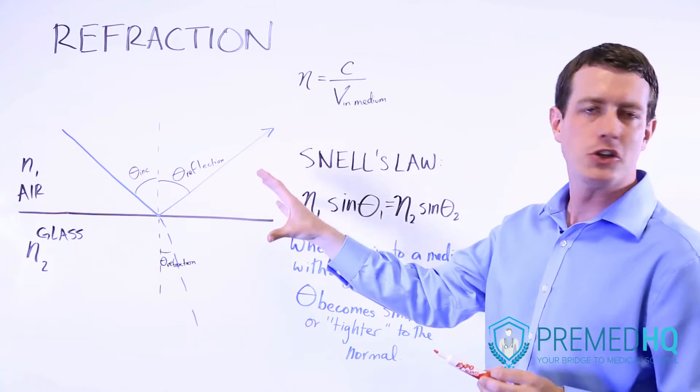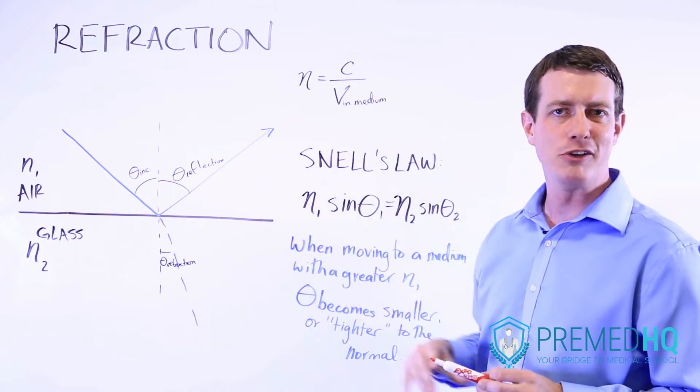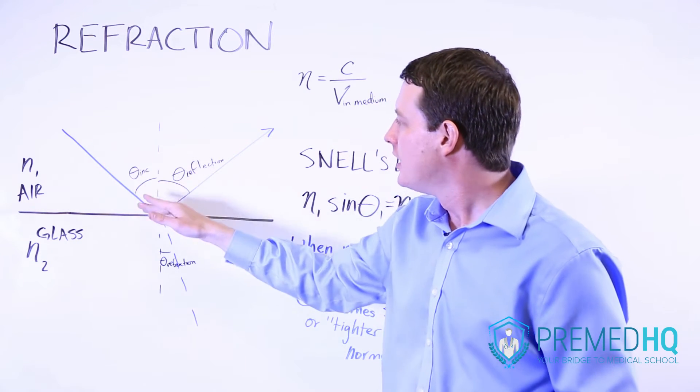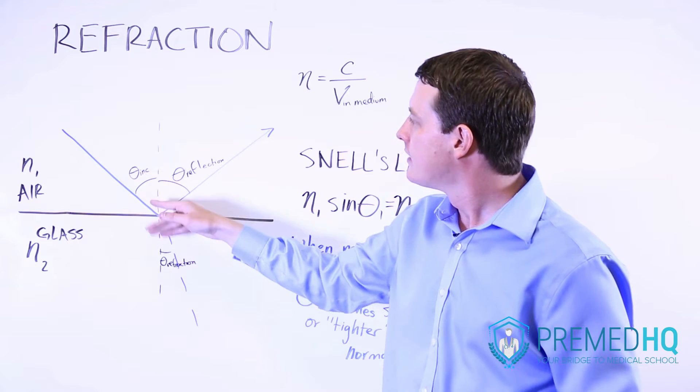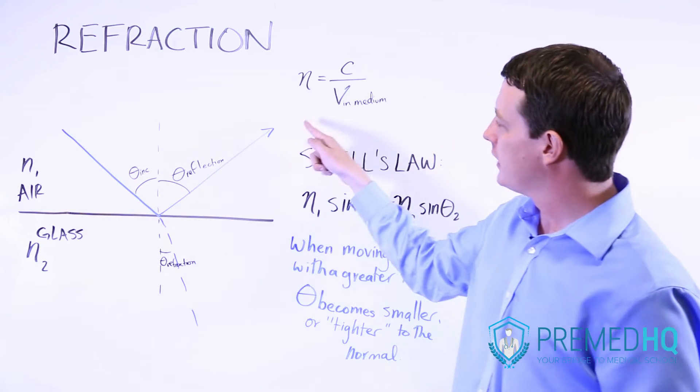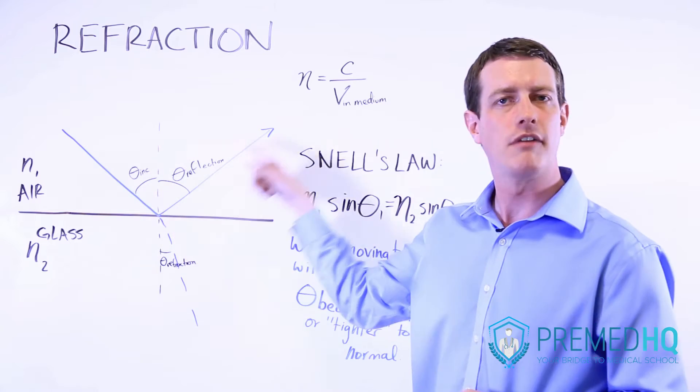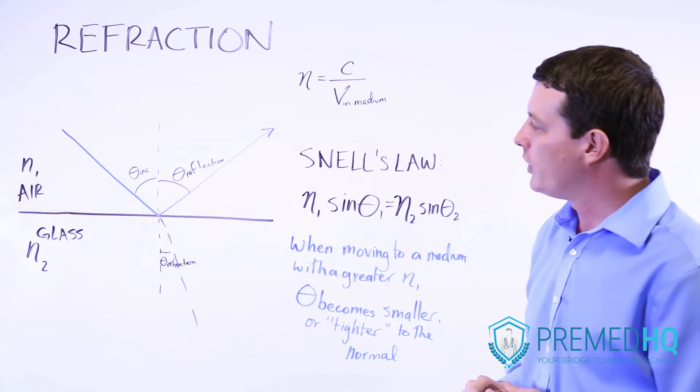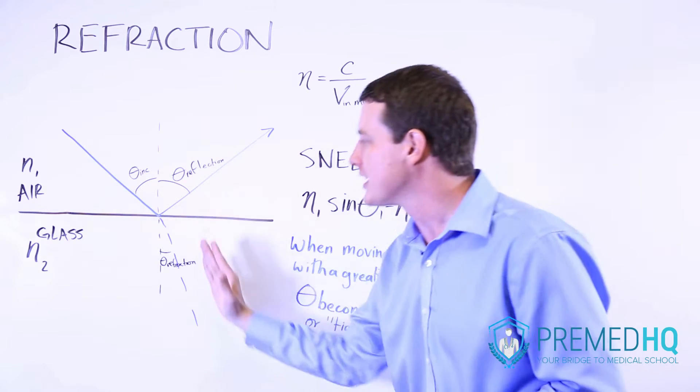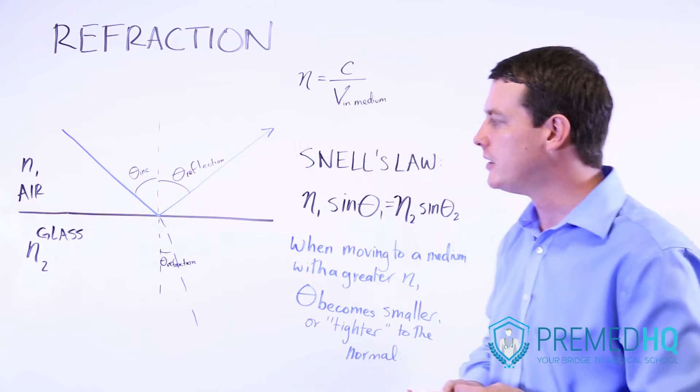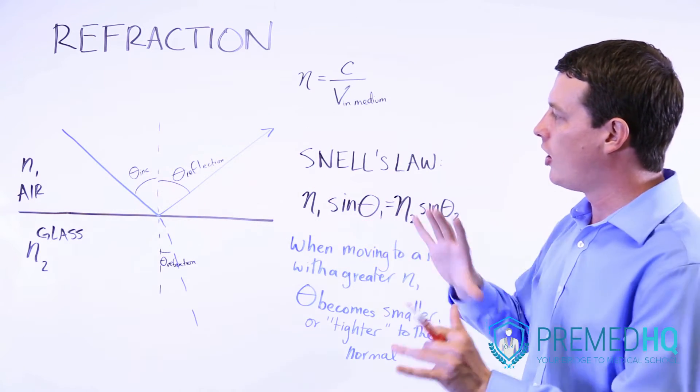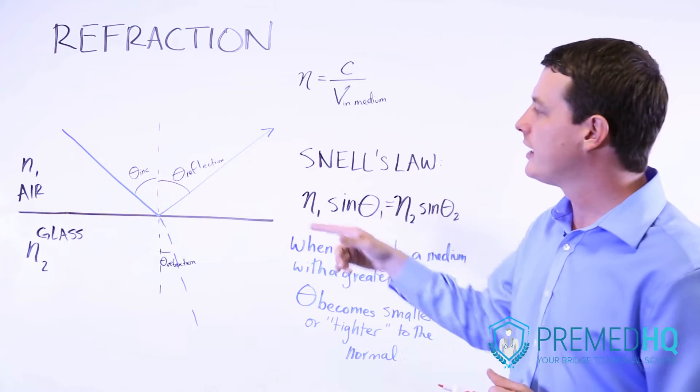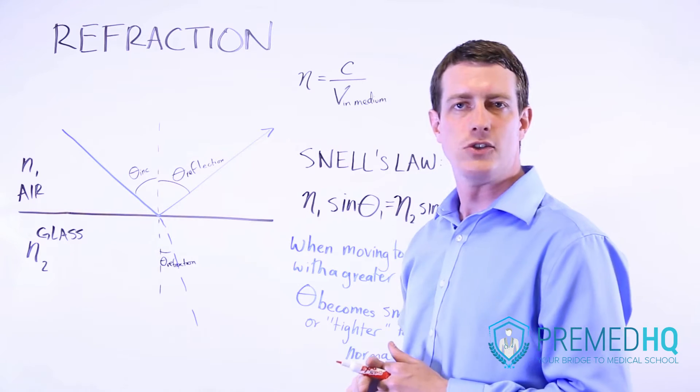There are a few angles you should be aware of when you're dealing with refraction problems. Those are the angle of incidence, the angle at which the light actually hits the surface. The angle of reflection, which is when it bounces off of that surface. And the angle of refraction, which is when the light transfers into that particular material. And these are all different angles. But the interesting thing is that they're all defined relative to this normal vector.